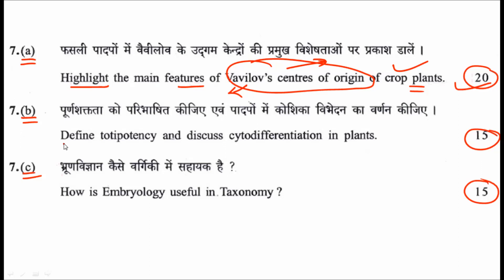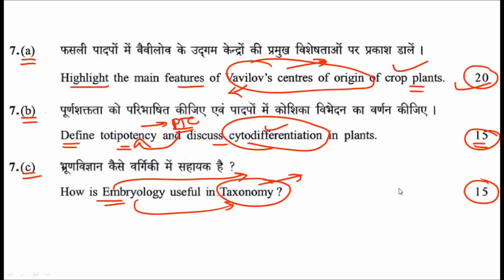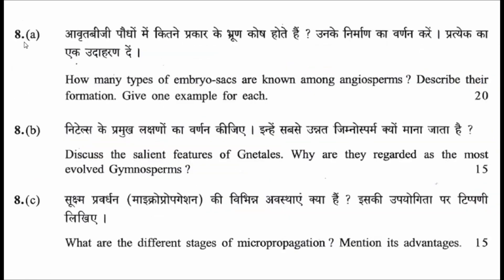The second sub-question asks you to define totipotency and discuss cytodifferentiation in plants — both concepts from plant tissue culture. Describing both earns 15 marks. The third sub-question asks how embryology is useful in taxonomy, i.e., how embryological characters can be used for taxonomical classification, for 15 marks.